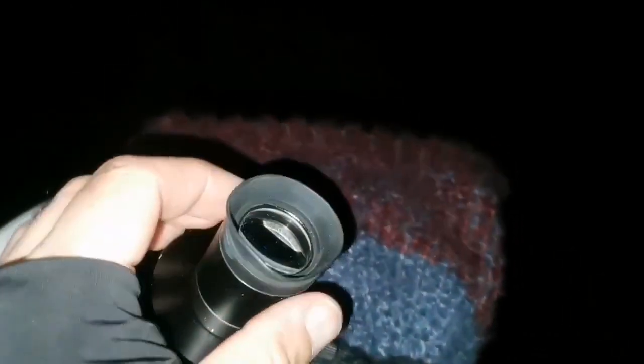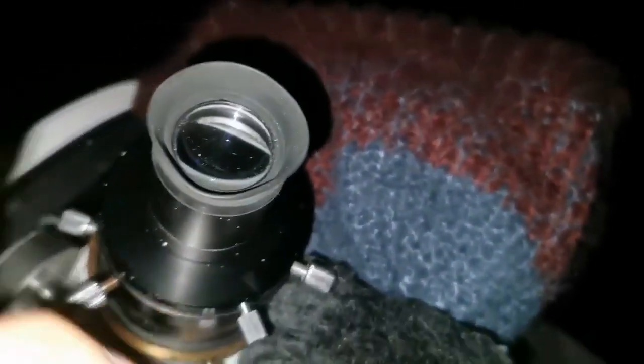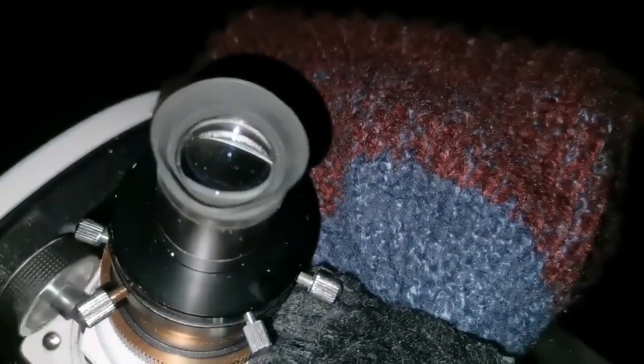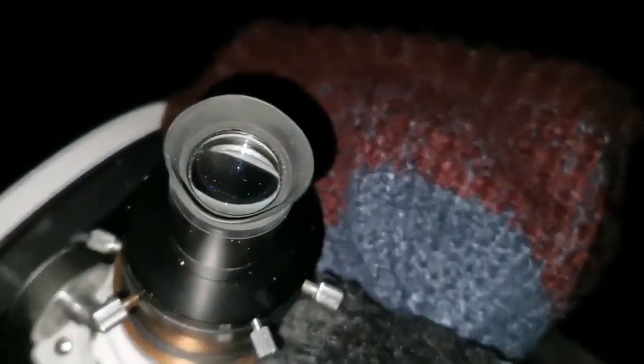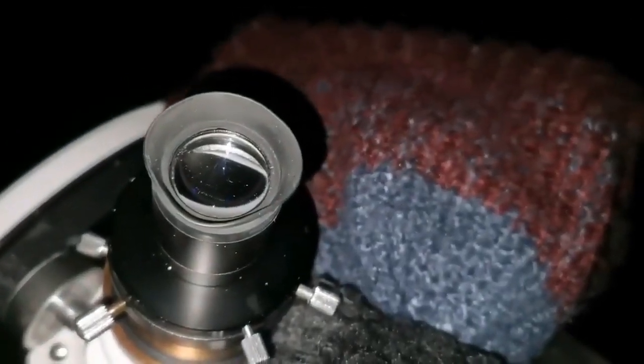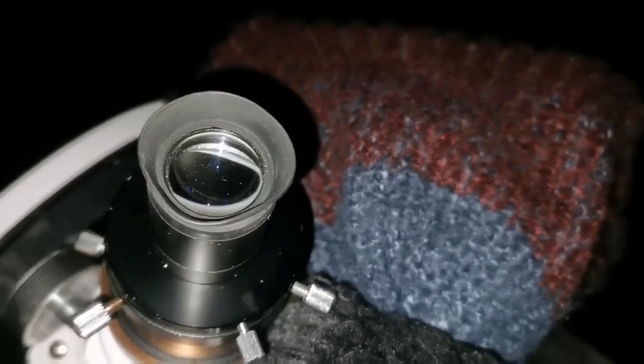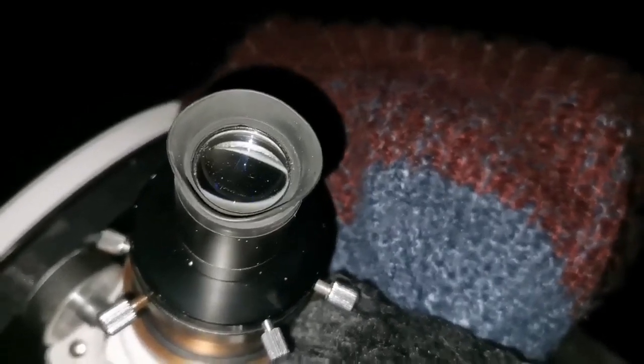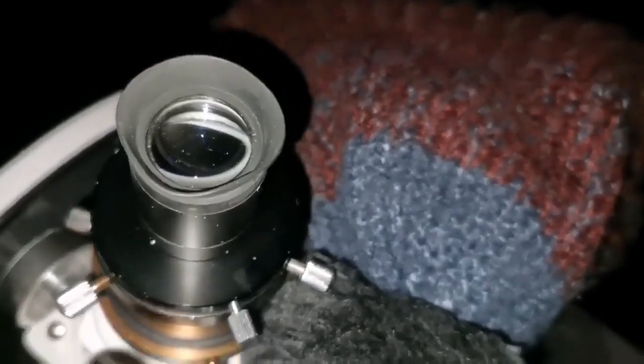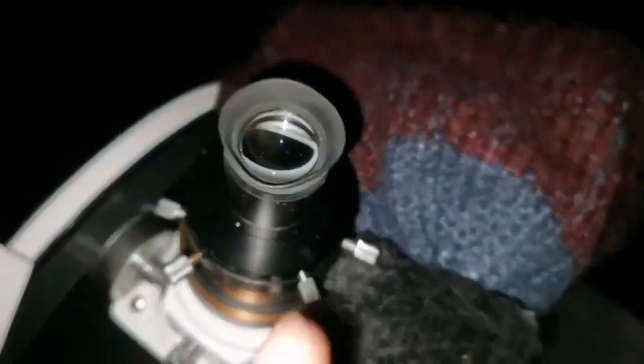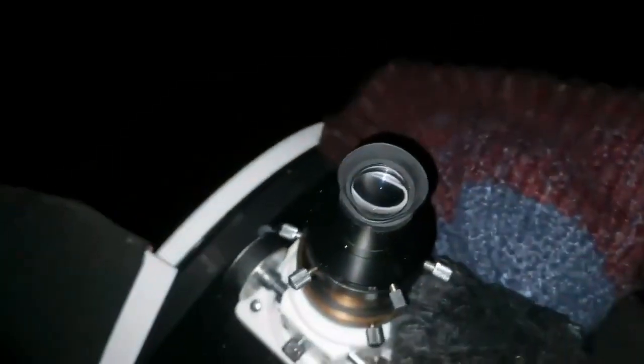So I'm back to the 25 millimeter Plossl and I'm telling you most of the discoveries in the field of astronomy were made with the Huygenian eyepieces and the other one Ramsden, even cheaper than that, simpler than that. They have just two lenses and you put them concave flat opposite each other or the other way around and that makes an eyepiece. And most of the discoveries in the history of astronomy were done by that.